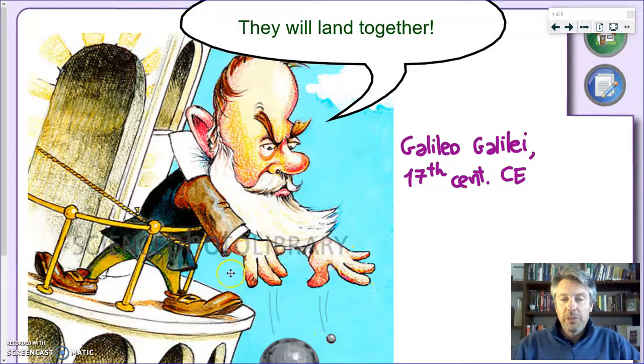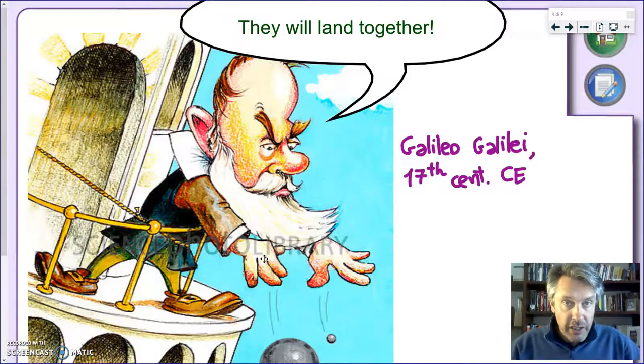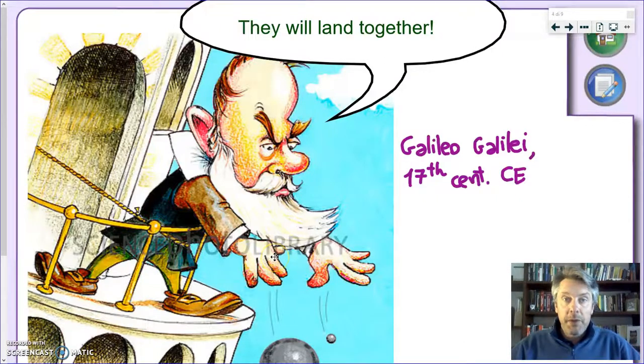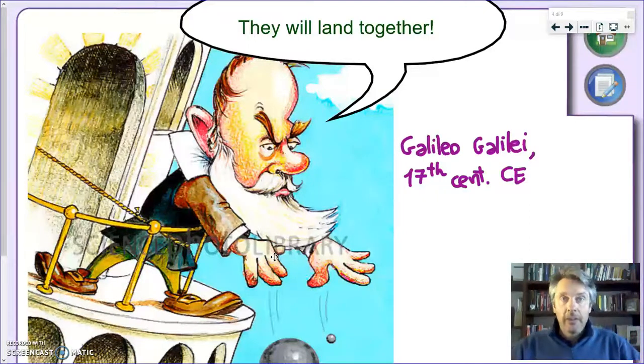And in order to prove this point, he allegedly went on top of the leaning tower of Pisa, took two cannonballs of the same size, but one was heavier than the other, dropped them at the same time, and apparently they landed together. Now, first of all, almost for sure, he didn't do this. Second, don't try this at home, don't go to the tower of Pisa, because most probably you're going to kill one of the tourists under the tower.